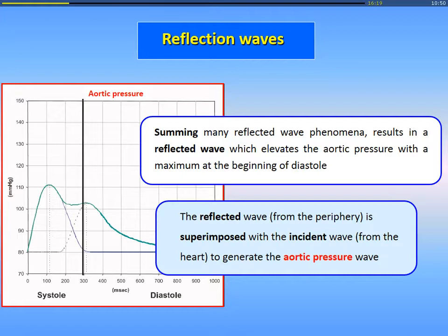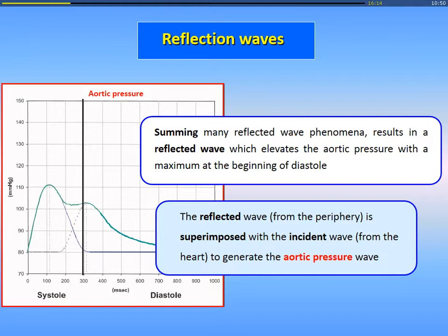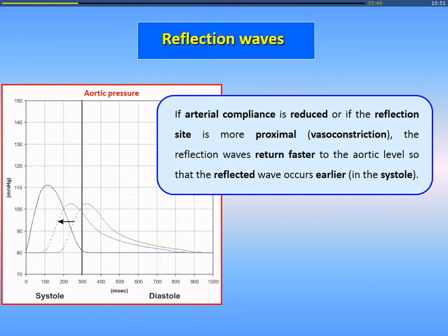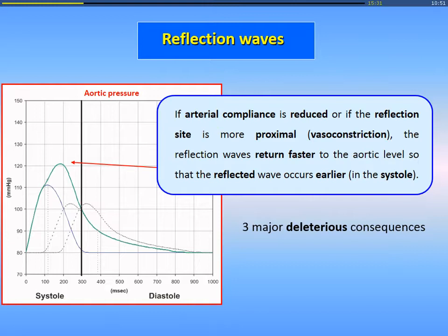The reflected wave from the periphery is superimposed with the incident wave from the heart, and this generates the final aortic pressure wave. This is for normal and young people. But if you have a reduction in arterial compliance, or if you have a reflection site which is more proximal — meaning vasoconstriction — the reflection wave returns faster to the aortic level, so the reflected wave occurs earlier. And instead of occurring during the diastole, it occurs during the systole.